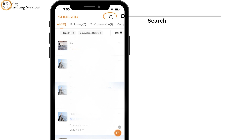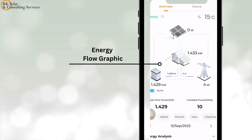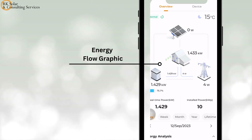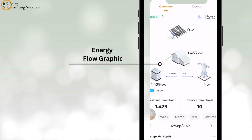Clicking the plant brings up the overview menu. Here you can see the energy flow graphic — the arrows will be moving when everything is connected. If the arrows are not moving, this means the inverter has lost its Wi-Fi connection to your modem.